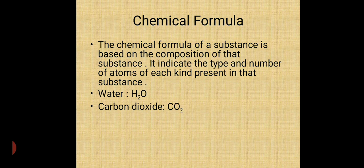Chemical formula. The chemical formula of a substance is based on the composition of that substance. Which type of element and in how many quantity they are present. It indicates the type and number of atom of each kind present in that substance. See chemical formula of water is H2O. It means in water, hydrogen and oxygen are participating. Two atoms of hydrogen and one atom of oxygen. Again, in carbon dioxide, how many elements are participating? They are two. Carbon and oxygen. Carbon is one and oxygen atoms are two.